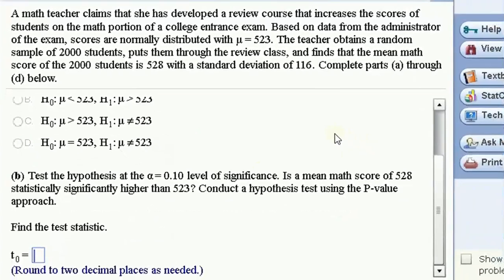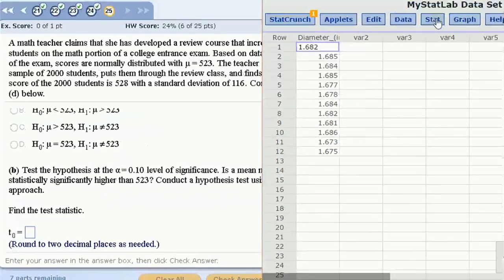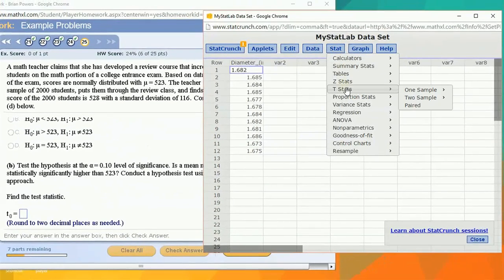To test at an alpha level of 0.10, we want to do a hypothesis test. Let's go back here, let's do a new hypothesis test, t-stat with a one-sample with summary data.